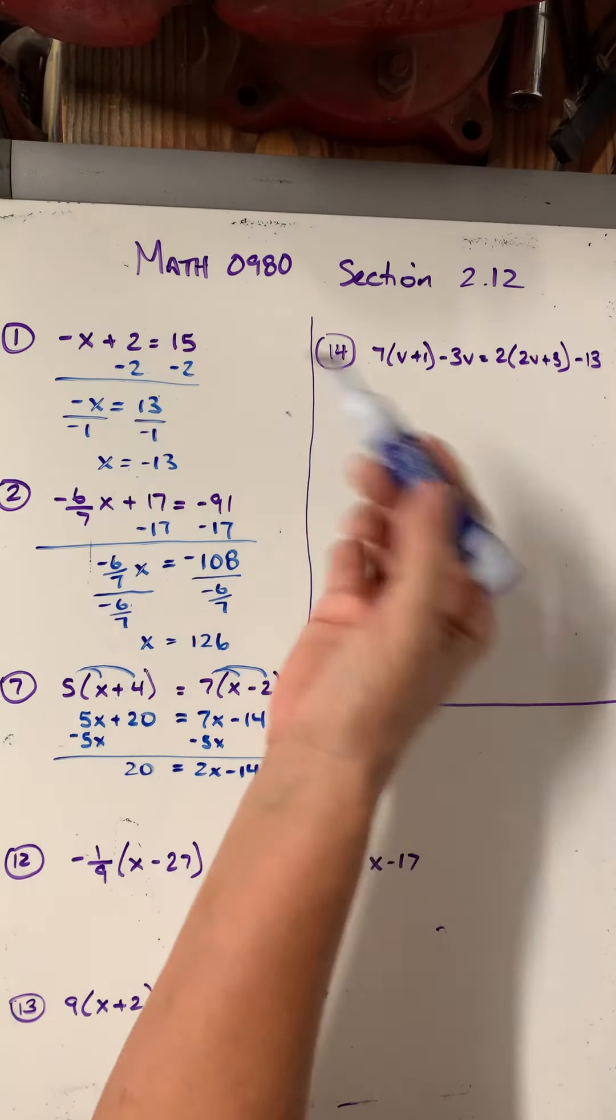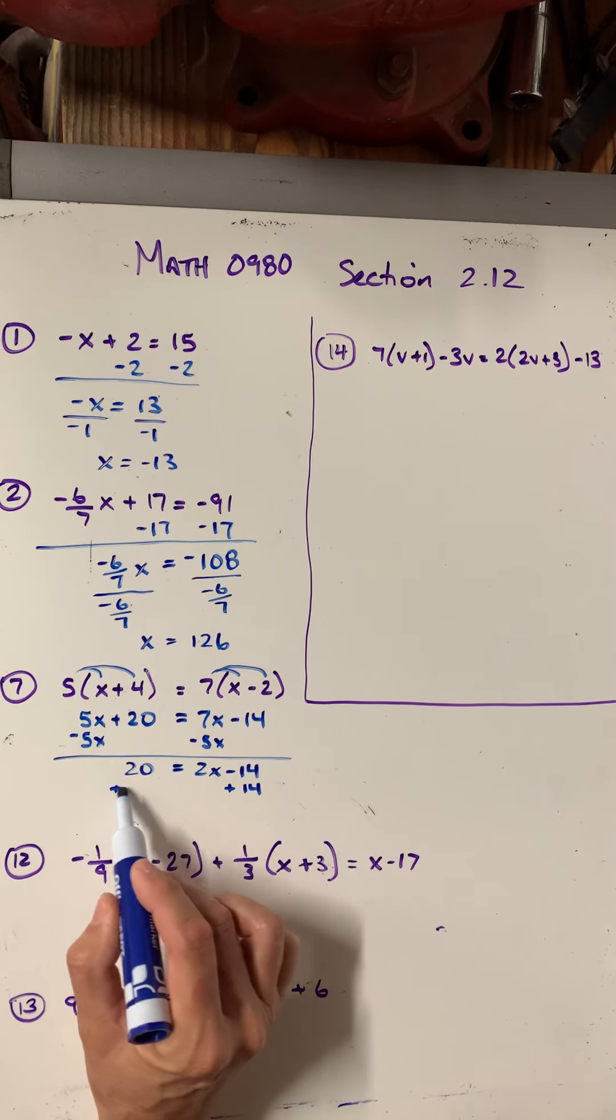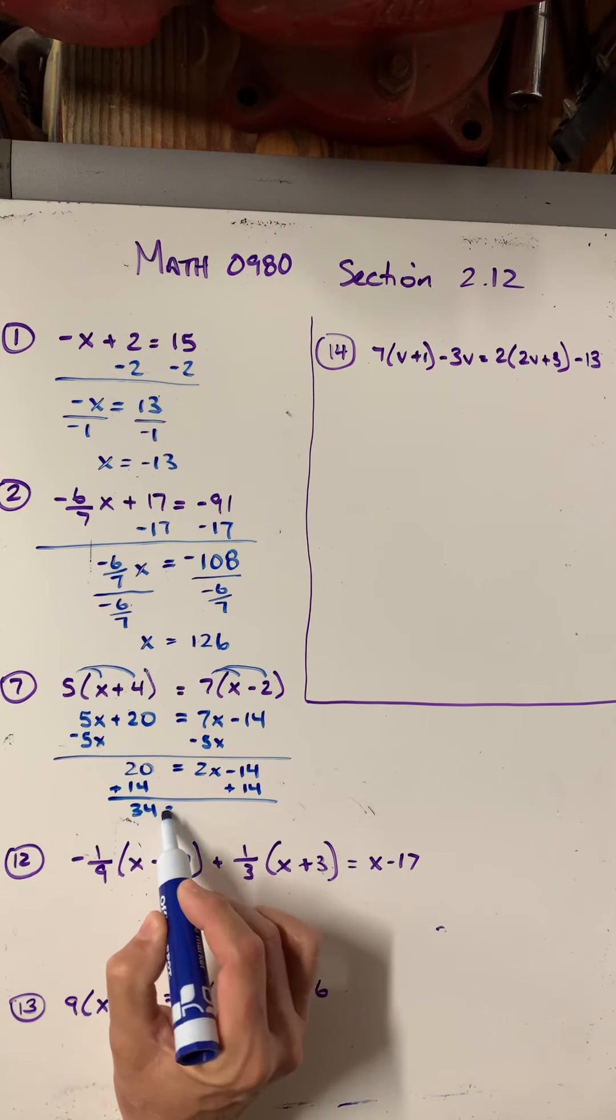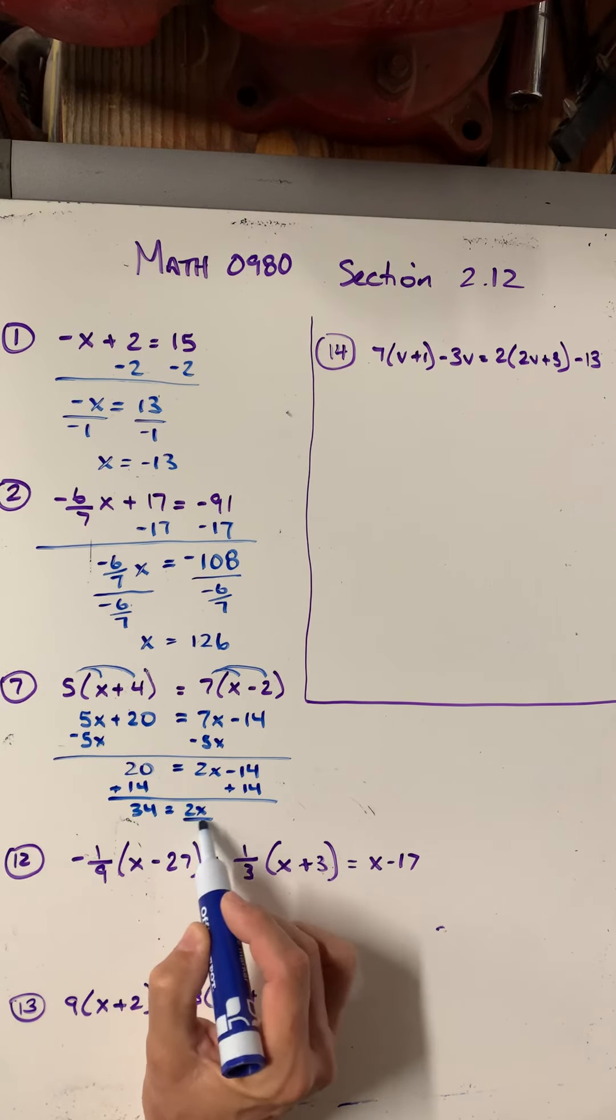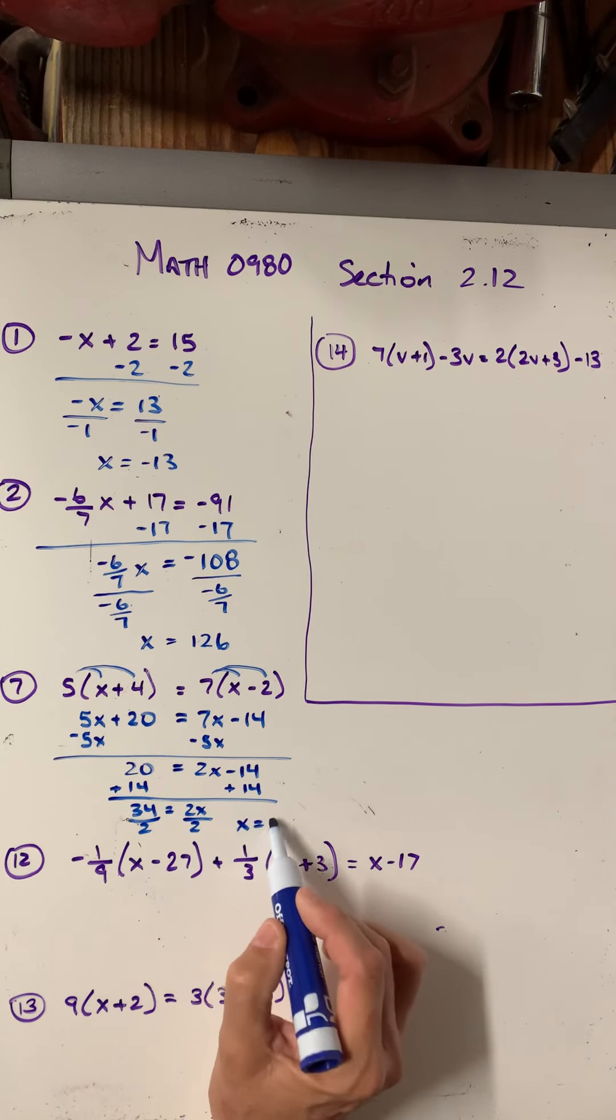And now it looks pretty much like question 1. So I could add the 14 to both sides. And I'll get 34 equals 2x. And then my last step, I'll divide by 2. So in this case, x equals 17.